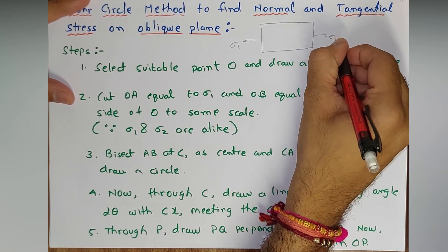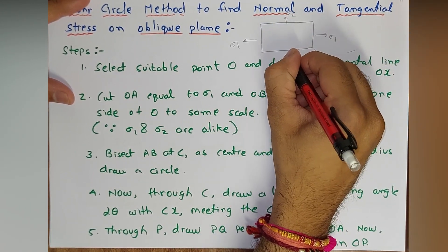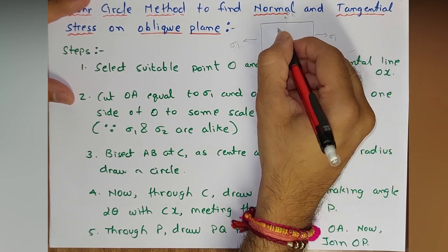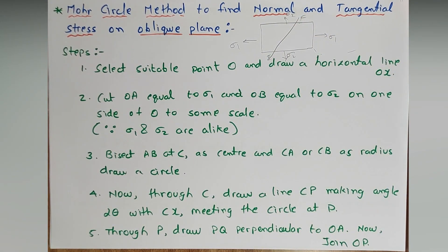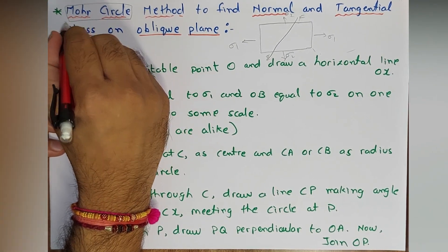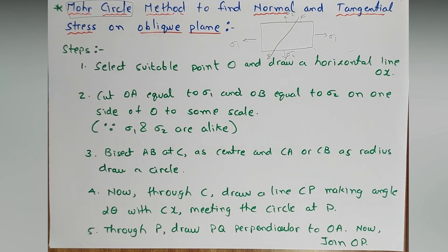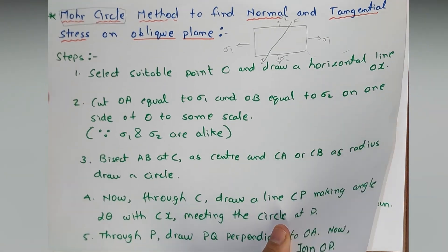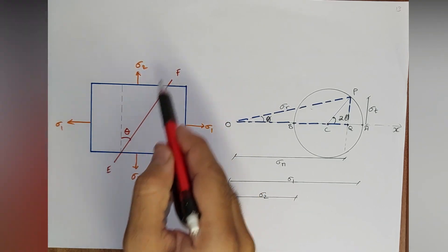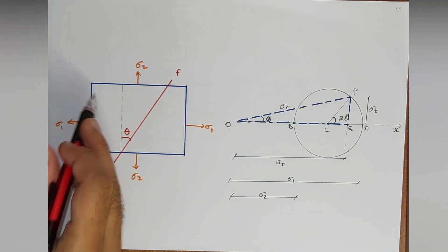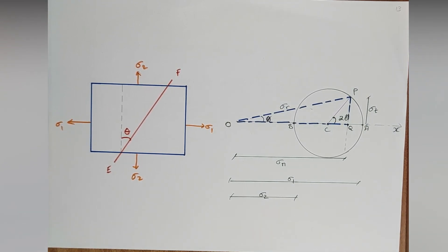If we consider any plane, there may be σ1 and σ2, and here is the oblique plane EF. Now, how can we calculate normal and tangential stresses? That is by the Mohr's Circle method. For this we need to use a graphical method — we prepare a graph corresponding to the theoretical part. Here I have prepared this figure: σ1, σ2, and plane EF at angle θ with the vertical.